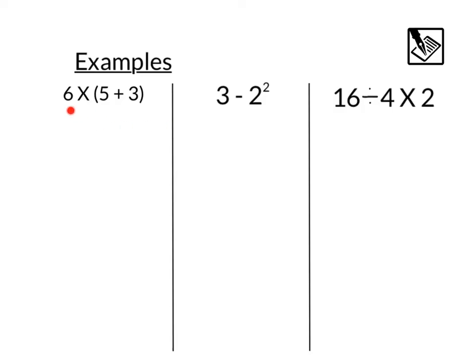Starting with this one, 6 times (5 + 3). We're going to start with those parentheses, 5 plus 3, that would lead us to 6 times 8. Then we have 6 times 8, which is going to give us a beautiful 48, right there.